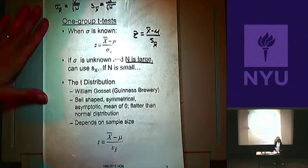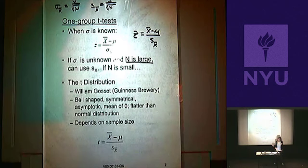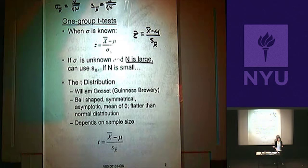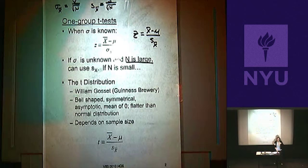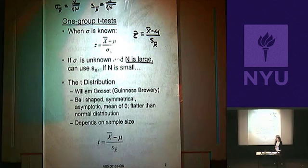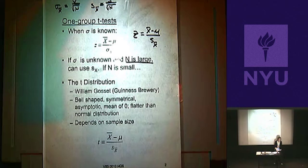The distribution we use was developed by a man named William Gossett, who worked for the Guinness Brewery Company. He published under the name 'Student' because Guinness didn't want their competition to find out he had solved this problem — this was around 1908. The distribution he developed is called Student's T distribution, or simply the T distribution.